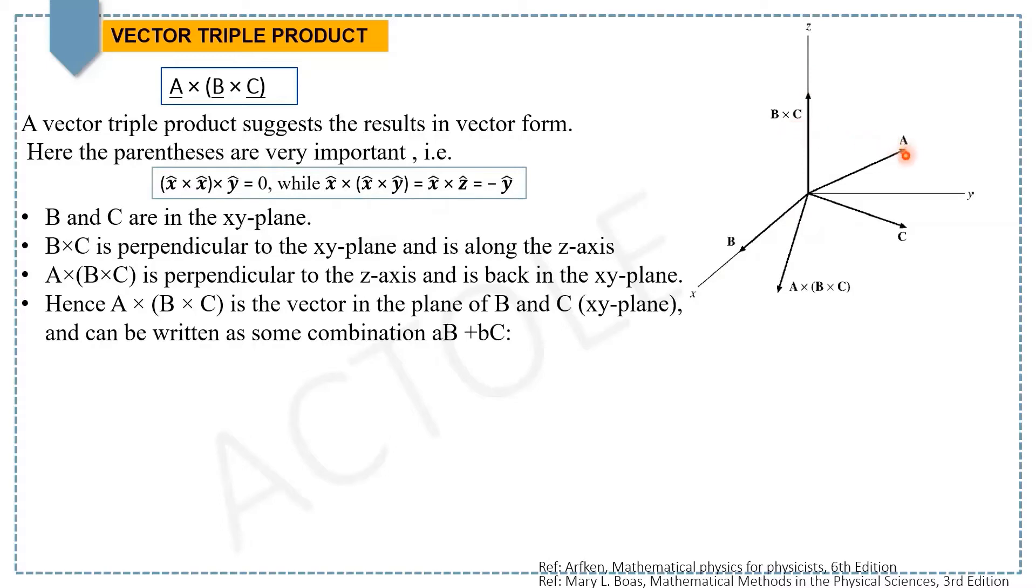After that, if you take A × (B × C), you get a new vector in the xy-plane. Hence A × (B × C) is a vector in the plane of B and C and can be written as some combination aB + bC.